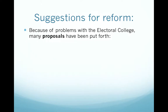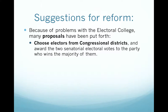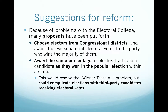Suggestions for reform: because of problems with the Electoral College, many proposals have been put forth. One proposal is to choose electors from congressional districts and award the two senatorial electoral votes to the party that wins the majority of them. Another proposal is to award the same percentage of electoral votes to a candidate as they won in the popular election within a state. This would resolve the winner-take-all problem, but could complicate elections with third-party candidates receiving electoral votes and could force the election into the House of Representatives.